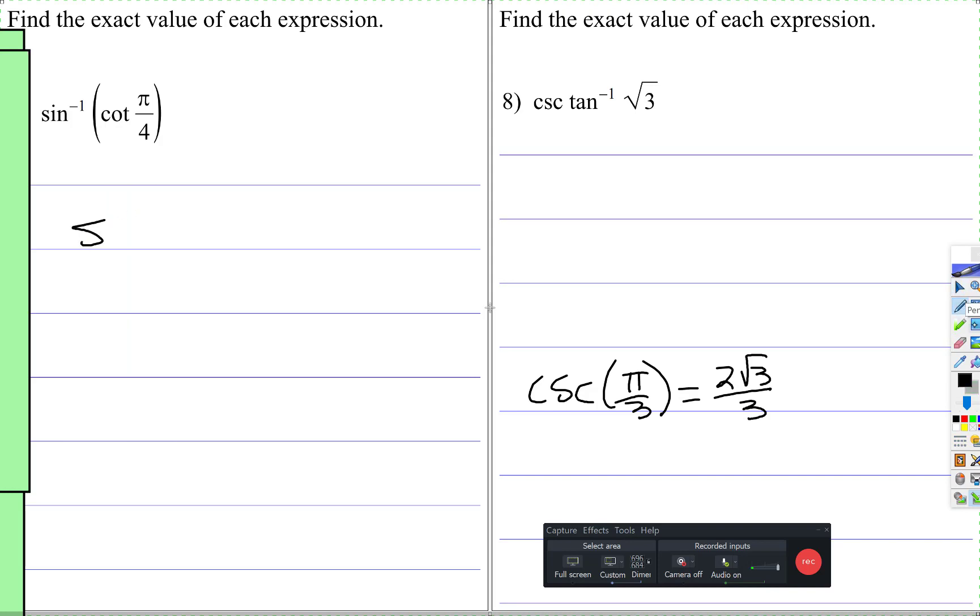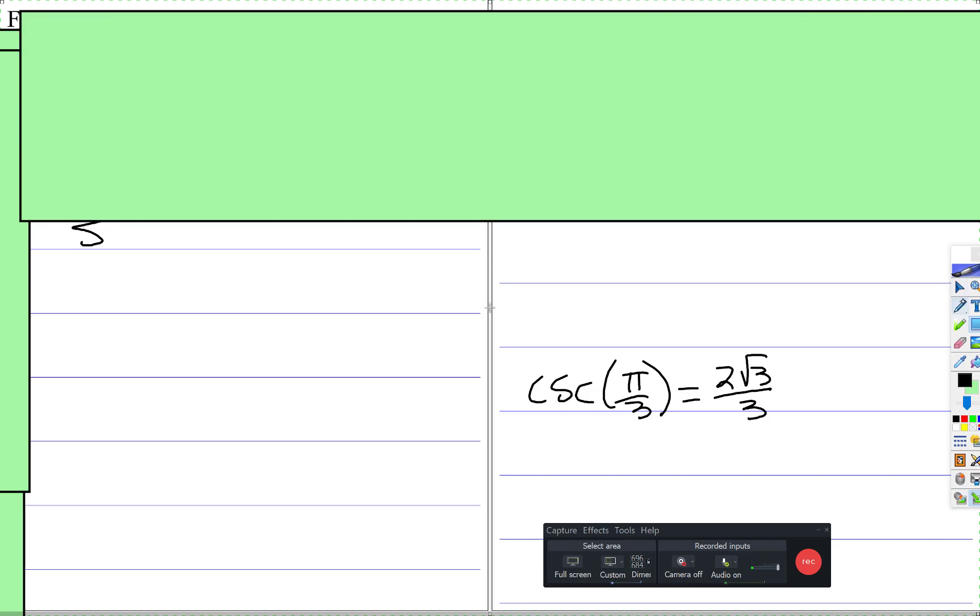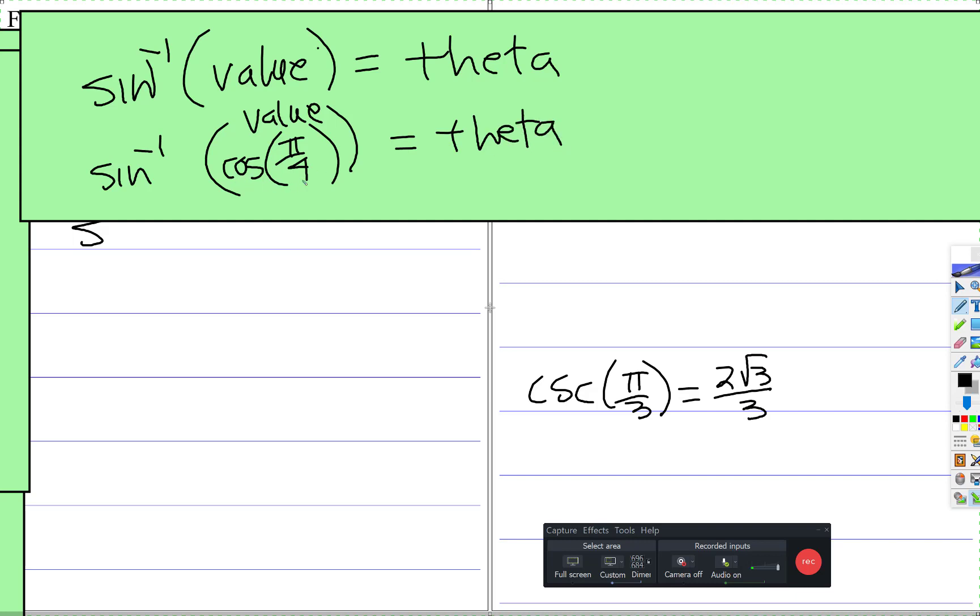When it says a trig function to the negative 1 value, the negative 1 exponent, and there's a value inside here, we're looking for the theta. Sometimes, as we saw in this example, inside we want that to be a value, but it might give you another trig function. Well, we still want the theta, you just might have to figure out what that value is.